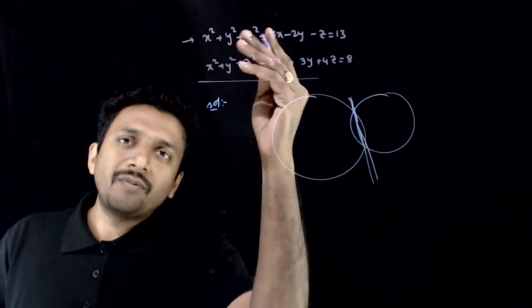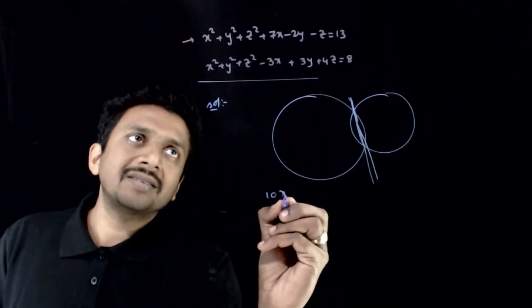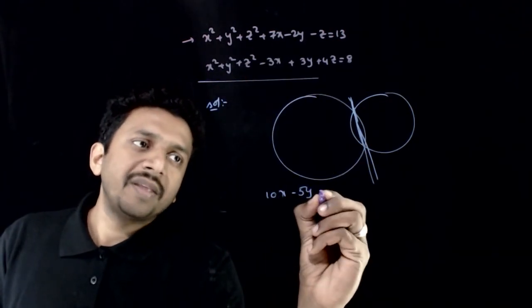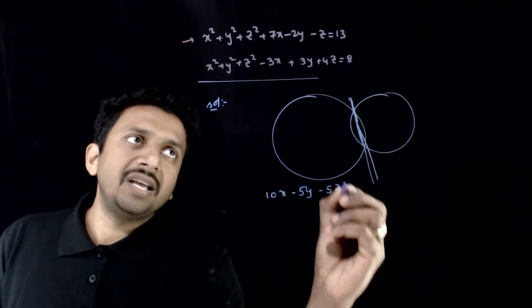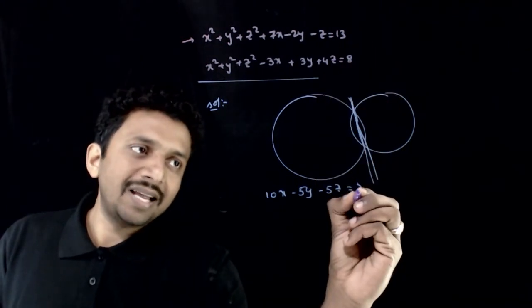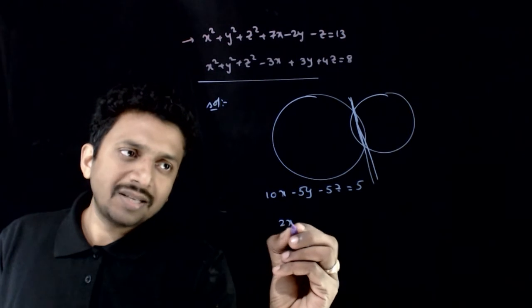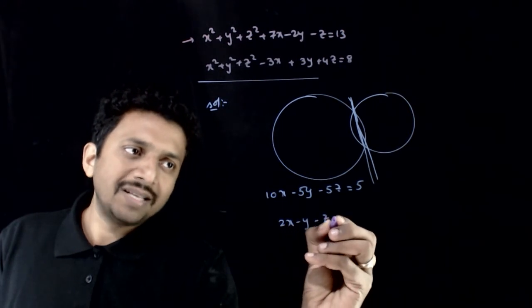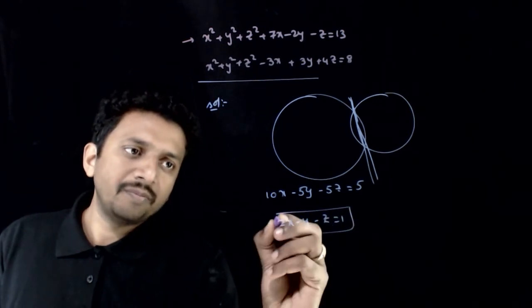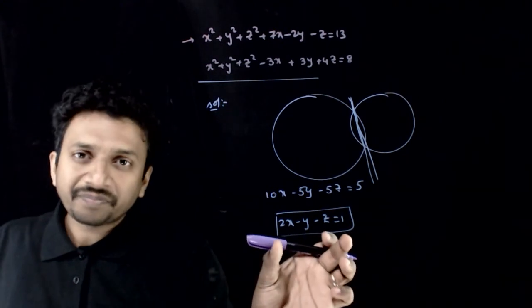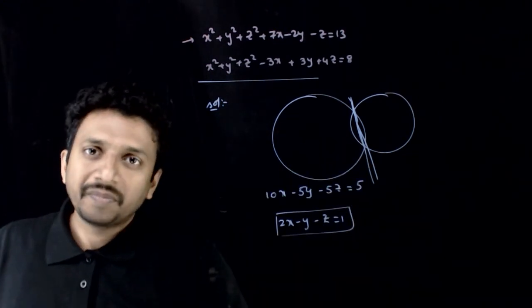If you subtract one equation from the other, you get 10x minus 5y minus 5z equals 5. Simplifying, 2x minus y minus z equals 1. This will be the required plane. Thank you.